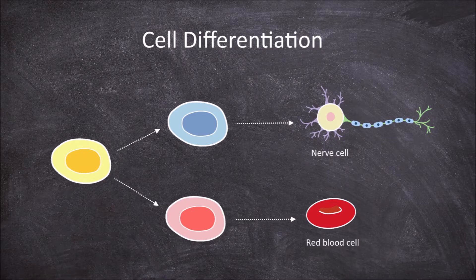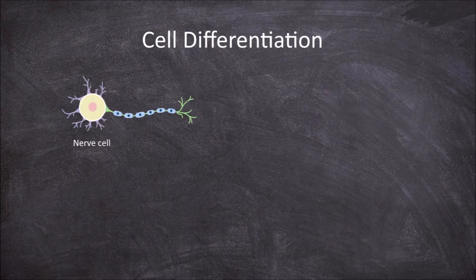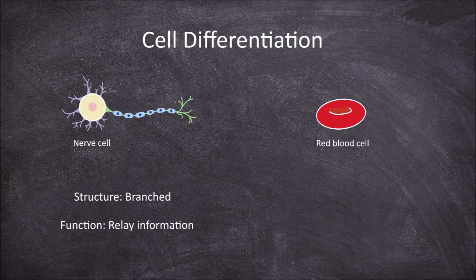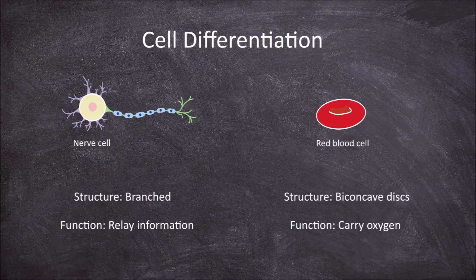For example, in humans you can have nerve cells, blood cells and many other types of cells which all have different structures and functions. Nerve cells are branched and function to relay information throughout the body. Red blood cells are biconcave discs and function to carry oxygen around the body.